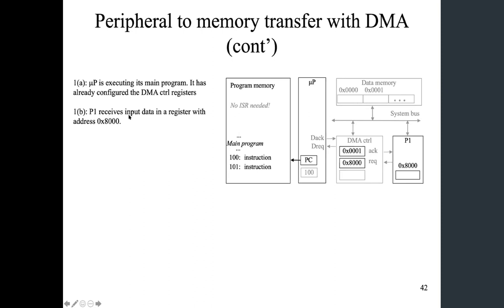So P1 receives input data in the register of the address 8000, as we saw before. And then P1 asserts request to request servicing by DMA controller. And the DMA controller asserts the acknowledgement.